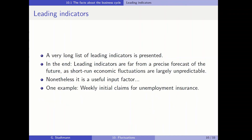The next sub-chapter talks about leading indicators, and a very long list of leading indicators is presented in the textbook. In the end, it is mentioned that leading indicators are far from precise in forecasting the business cycle in the future, and short-run economic fluctuations are largely unpredictable. Nonetheless, the textbook argues that leading indicators can be a useful input factor for the prediction process.